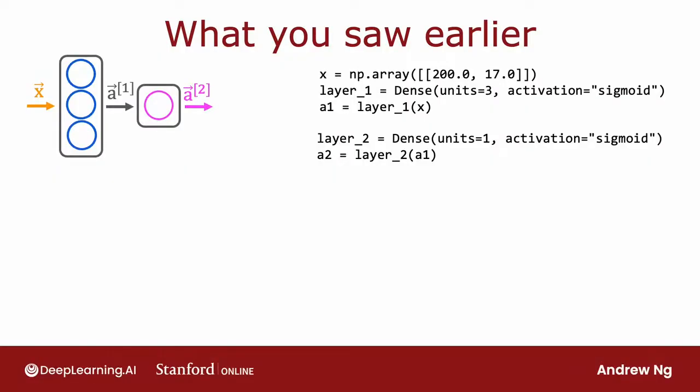What you saw previously was if you want to do forward prop, you initialize the data X, create layer one like so, then compute A1, then create layer two, and compute A2. So this was an explicit way of carrying out forward prop one layer of computation at a time.